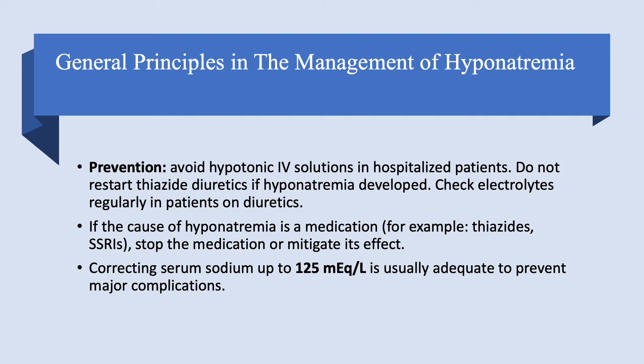If the cause of hyponatremia is a medication like a thiazide or an SSRI, stop the medication or at least try to mitigate its effect — perhaps with water restriction, salt tablets if appropriate, or a loop-type diuretic. Principle number three: correcting serum sodium up to 125 is usually enough to prevent major complications. You're not going to get coma or seizures if sodium is 125 or above.